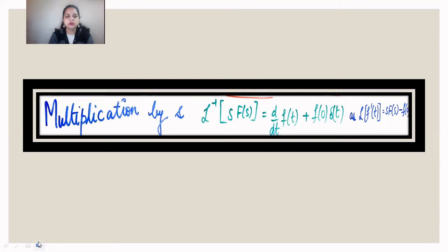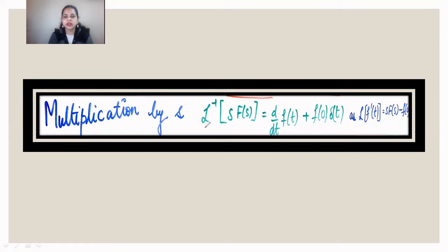Let us now see methods for calculating inverse Laplace transforms. We already have a formula for the Laplace of a derivative: Laplace of f'(t) equals s·F(s) minus f(0). When we take this Laplace to the right-hand side, we get a result for the inverse Laplace transform: Laplace inverse of s·F(s) equals f'(t), where f'(t) is written as d/dt of f(t).